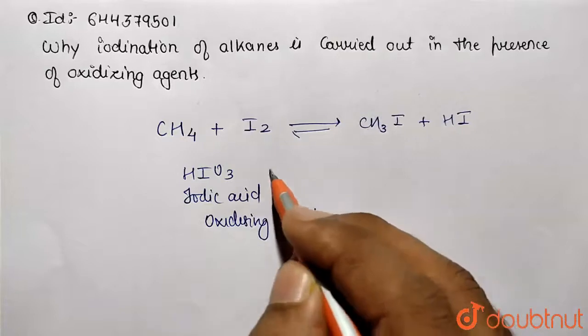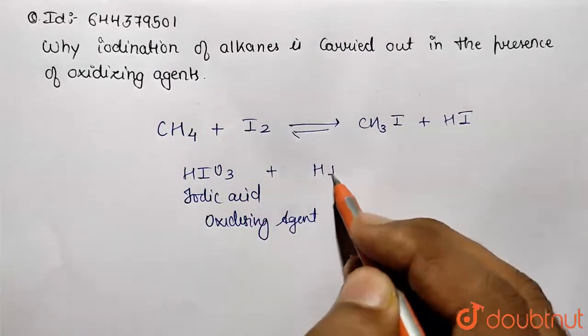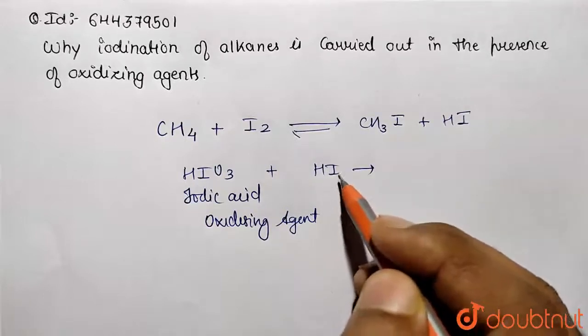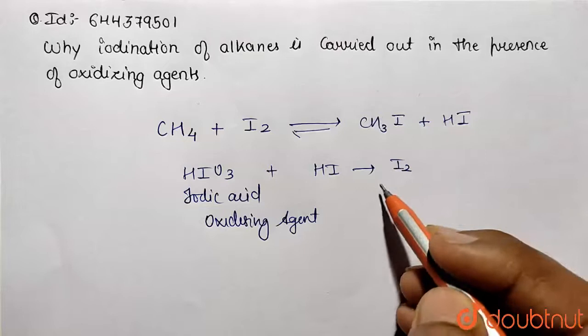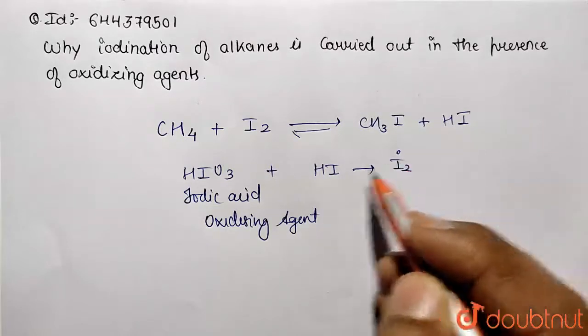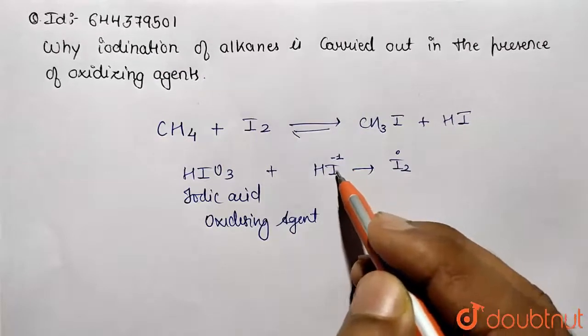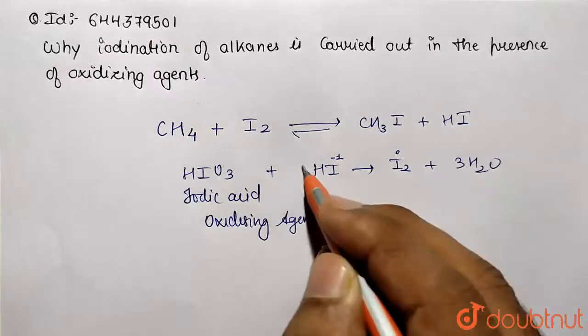So this iodic acid which is acting as an oxidizing agent is reacting with HI and correspondingly converting this HI to I2 form. So over here this is being reduced, so this oxidation state comes to zero which was initially minus one. So over here reduction is being done and correspondingly water will be released out.